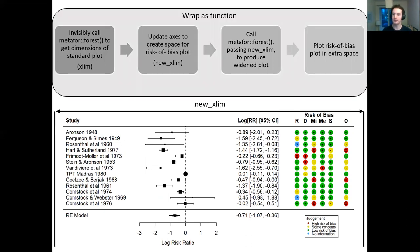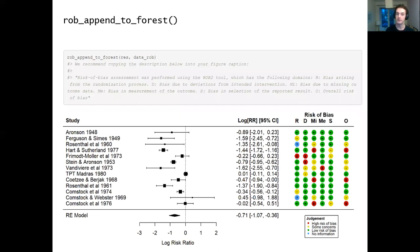Finally, wrap all of this as a function so that users can reliably implement this functionality themselves. That's exactly what our new rob_append_to_forest function does as part of the RobViz package. It takes the results object from your meta-analysis, your risk of bias dataset, and appends them together into a paired forest and risk of bias plot.